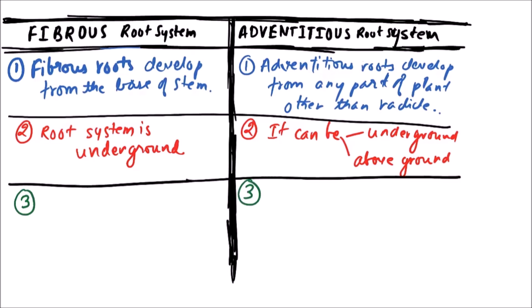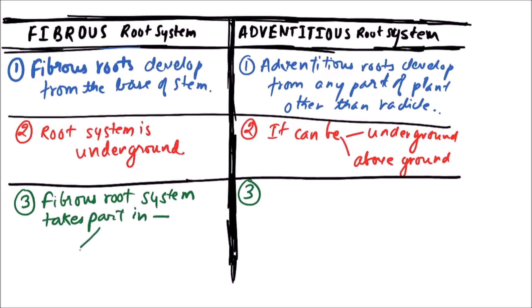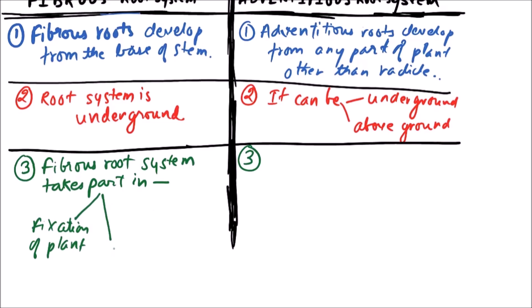The next difference: the fibrous root system takes part in functions like fixation of the plant, absorption of water, or absorption of minerals.